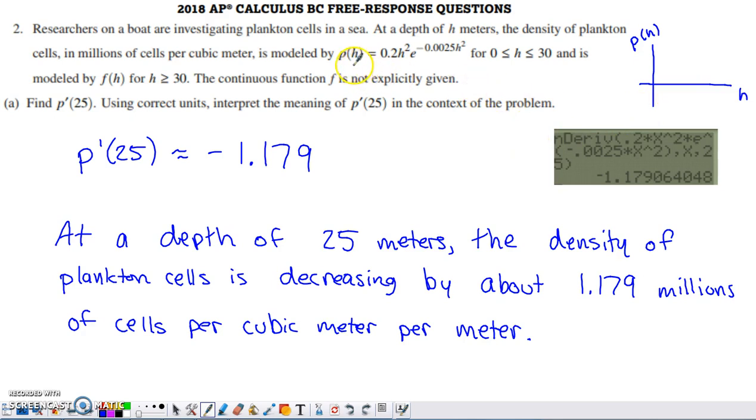I would have p of h plotted on the y-axis and h plotted on the independent variable axis, the x-axis. And I think about the units on the y-axis. So the units on the y-axis would be millions of cells per cubic meter.